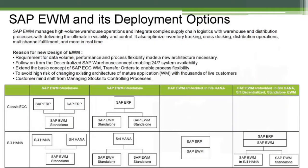SAP EWM is a warehouse product from SAP used to manage high-volume warehouse operations. It integrates complex supply chain logistics and warehousing distribution processes, providing ultimate visibility and control. It not only stores stock but also helps optimize inventory tracking, cross-docking, distribution operations, and multi-channel fulfillment in real time. Due to high data volume, better performance, and flexibility requirements, there was a need to create a new architecture — leading to SAP EWM.